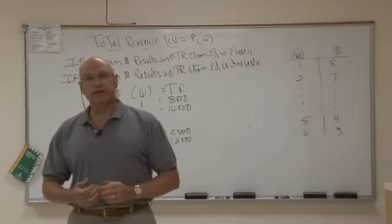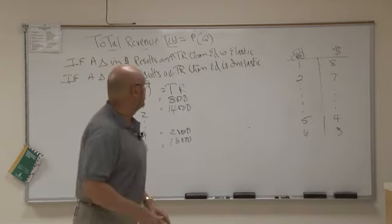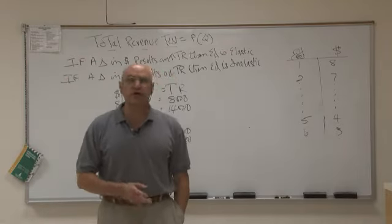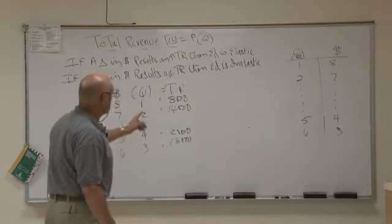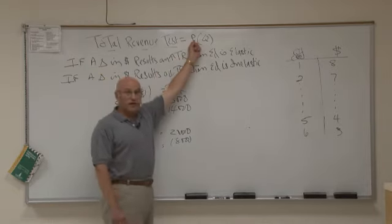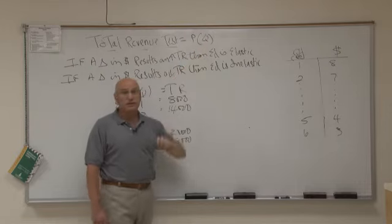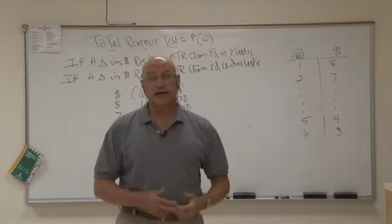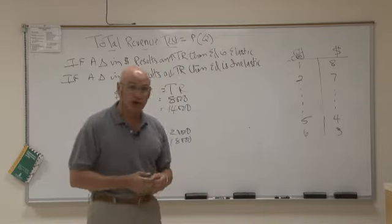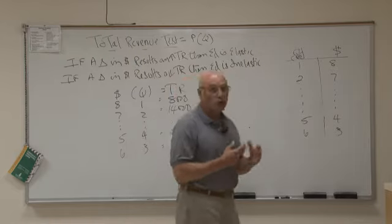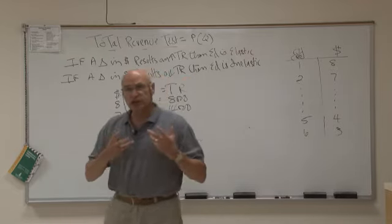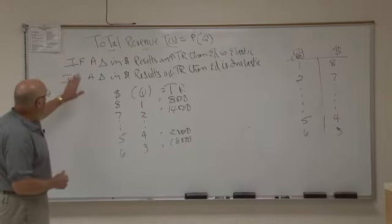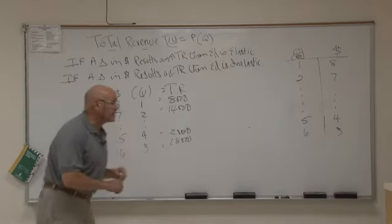Another way we can tell if a particular product is elastic or inelastic is through the use of what we call the total revenue test. In order to calculate the total revenue that a firm brings in, we simply calculate the price of the good times the number of goods sold. So if we have 10 shirts for sale at $25 a shirt, the company's total revenue at that point would be $250.